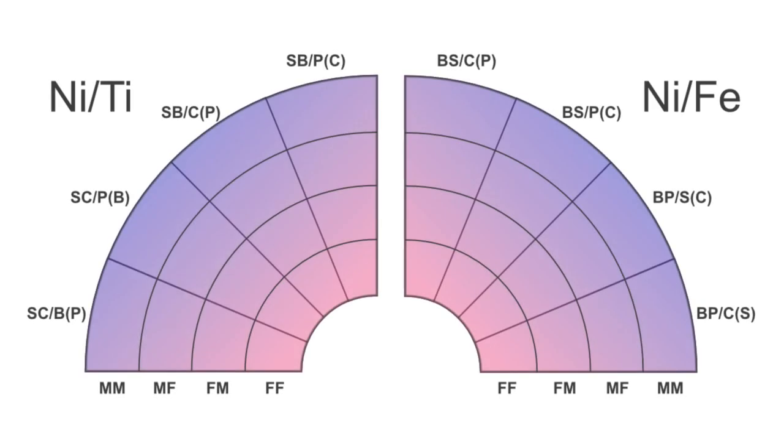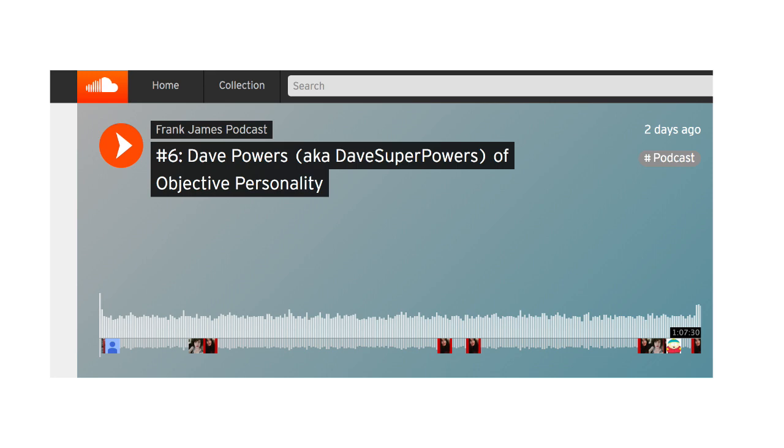All right, what you're looking at here is a spectrum of 32 INFJs. I know, things just went from bad to worse, right? So I was on a podcast with Frank James, great guy on YouTube here. We're talking about a lot of different things.